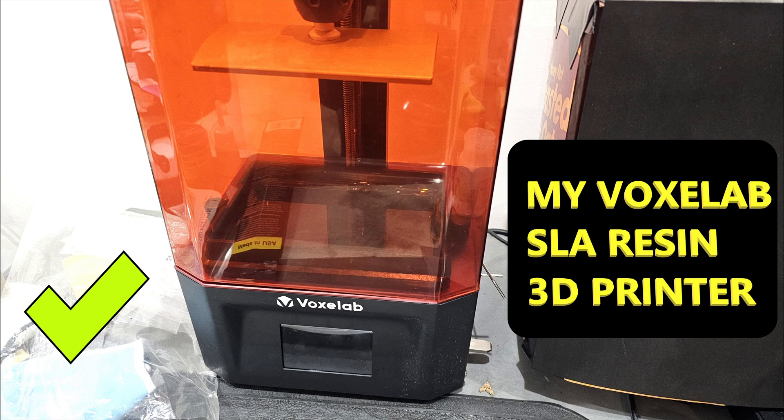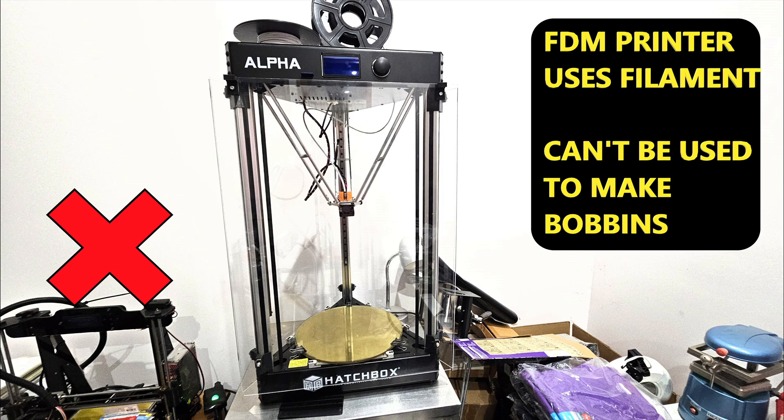You need a resin printer to make these. You cannot use an FDM printer. This is my Voxelab printer. This is an FDM printer. It uses filaments, and you cannot use these to make bobbins.